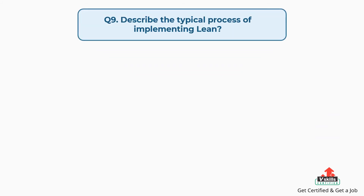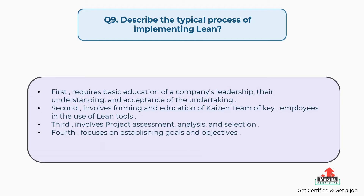Question number nine: describe the typical process of implementing lean. The answer is: first, requires basic education of a company's leadership, their understanding, and acceptance of the undertaking. Second, involves forming an education of Kaizen team of key employees in the use of lean tools. Third, involves project assessment, analysis, and selection. Fourth, focuses on establishing goals and objectives.